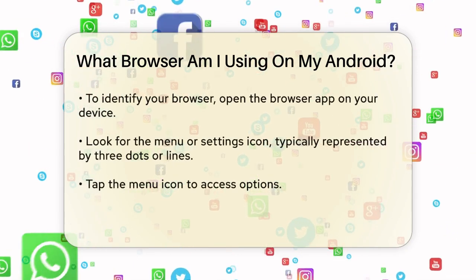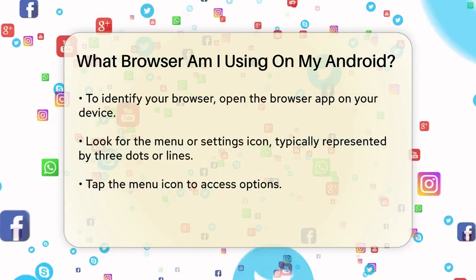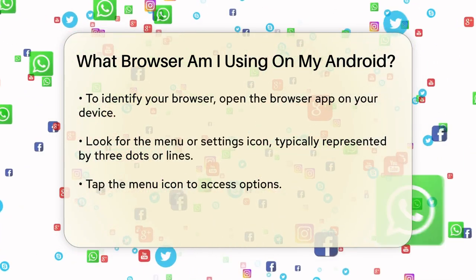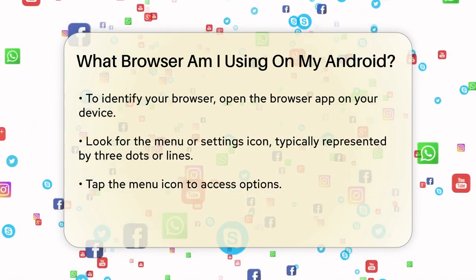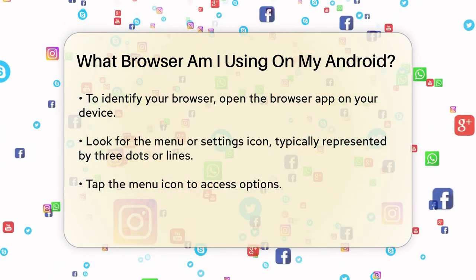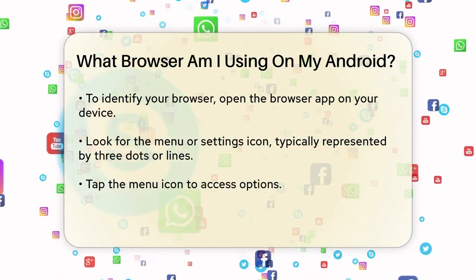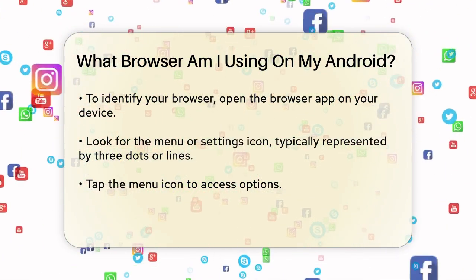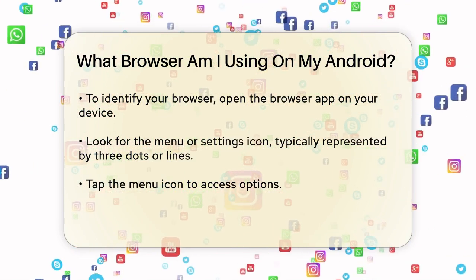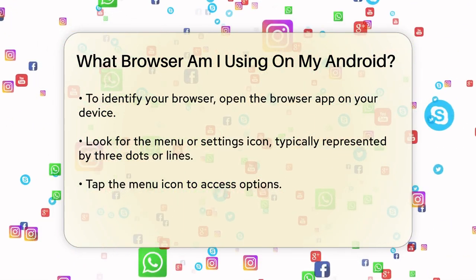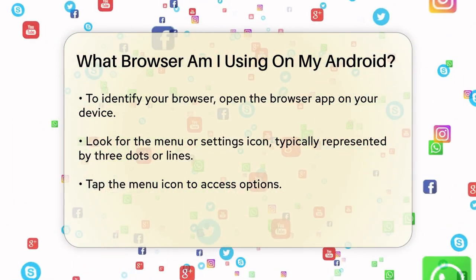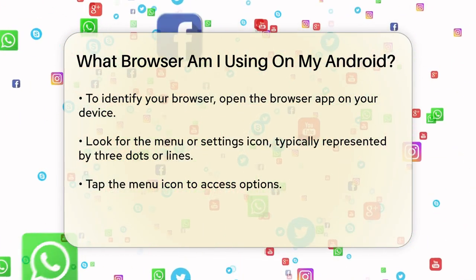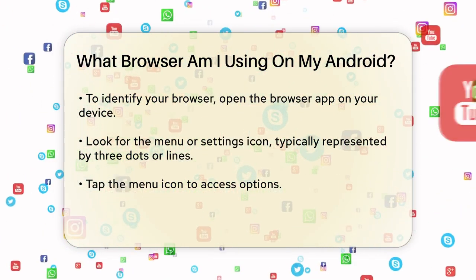To find out which browser you're using, you can follow a few simple steps. First, open the browser app on your Android device. Once it's open, look for the menu or settings icon, usually represented by three dots or lines. Tap on this icon to open the menu.